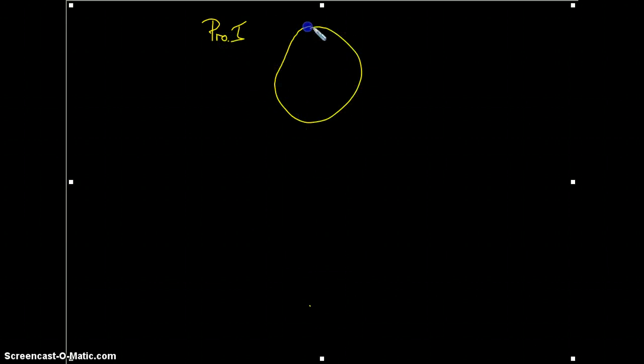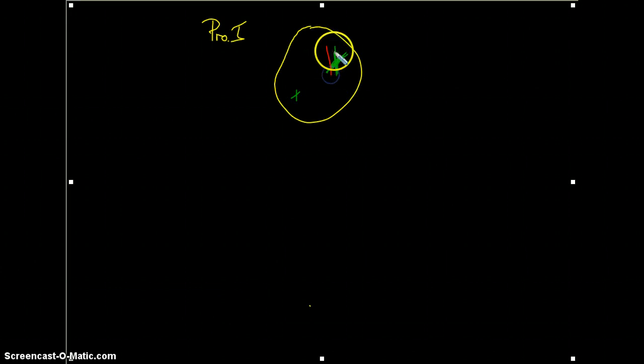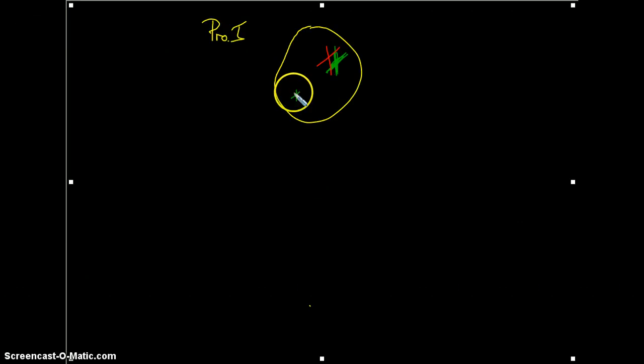So let's first imagine a cell in prophase I of meiosis. So here we have our original cell consisting of homologous chromosomes. So here we'll draw a large chromosome and a smaller chromosome, here's its homologous partner, here's its homologous partner.